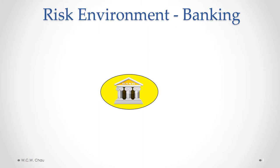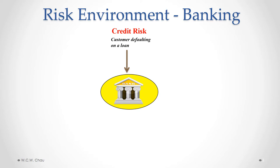Any business operates in a complex environment which subjects it to many different types of risks. Let's look at a bank, for example, and the specific risks that a bank is typically subjected to. Whenever a bank makes a loan to a customer, it is subject to credit risk — the risk of that customer not paying back the loan, or in other words, defaulting on the loan.